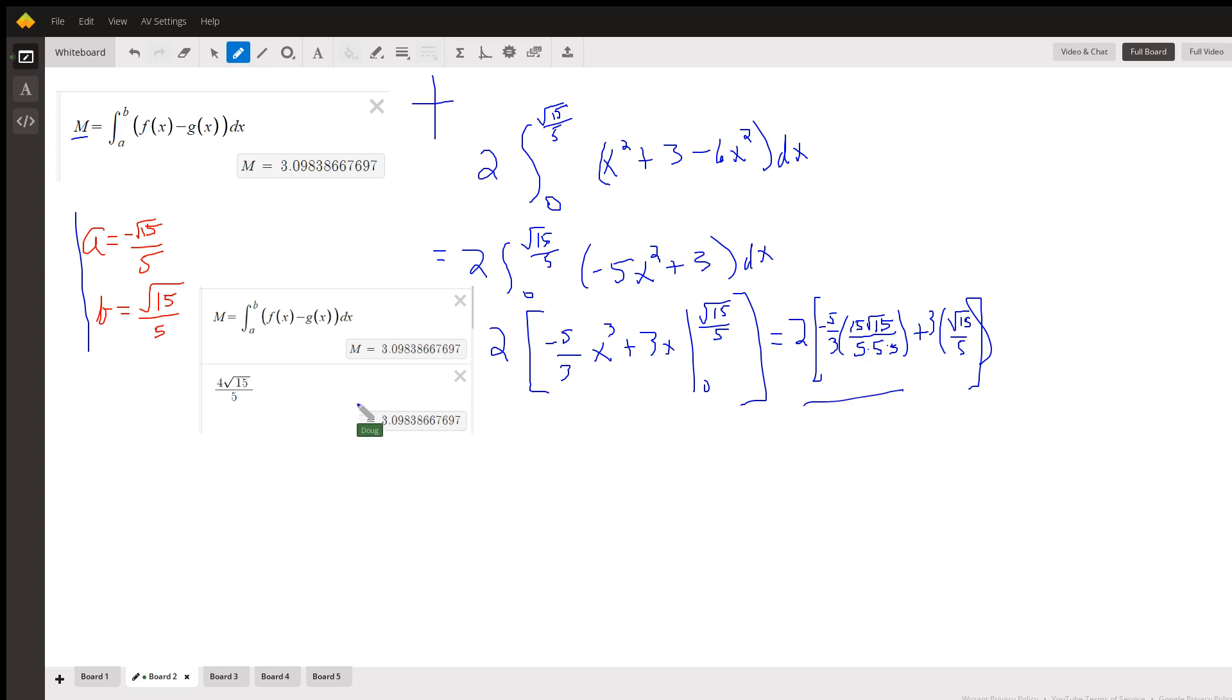Here's confirmation of what the area actually is: 4 radical 15 over 5. That's an exact value for that area.